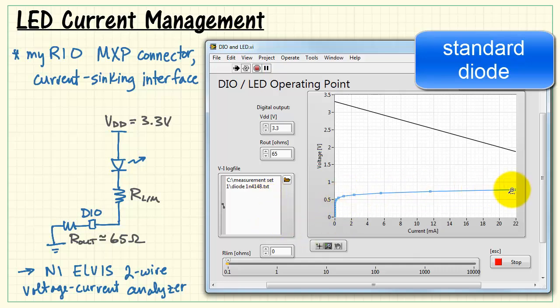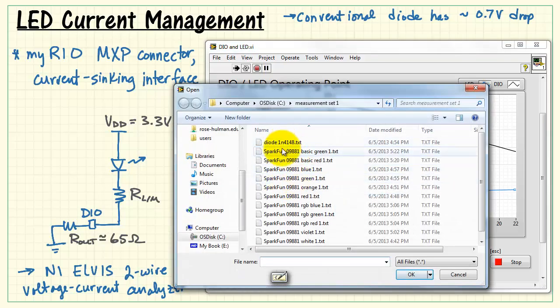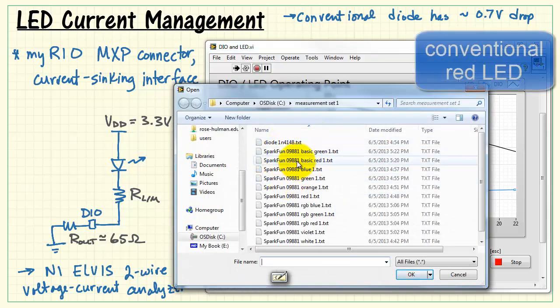Let's begin with a standard diode just for reference. We see that the curve flattens out around 0.7 volts, and we recognize that as being the typical standard voltage drop for conventional diodes.